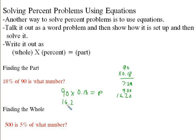That makes sense because 18% is about 20%, which is about a fifth. And 90 is about 100. So a fifth of a hundred is 20, so the answer should be about 16.2 — and it checks out.